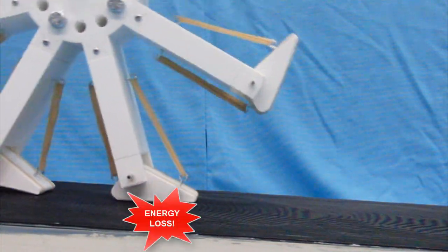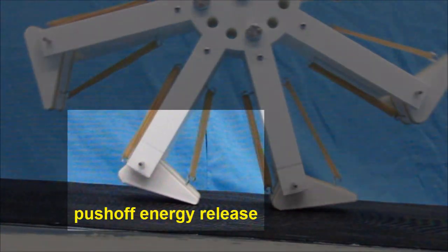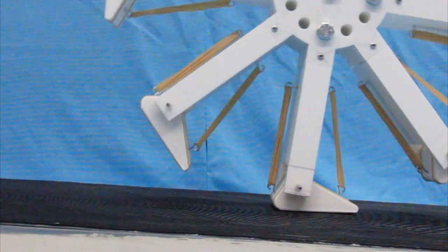As it walks, the front foot collides with the ground, losing energy, but we get energy back when the rubber bands on the trailing leg shorten. The back foot pushes off from the ground, releasing elastic potential energy and giving the wheel additional kinetic and gravitational potential energy. This allows the wheel to continue the walking cycle.